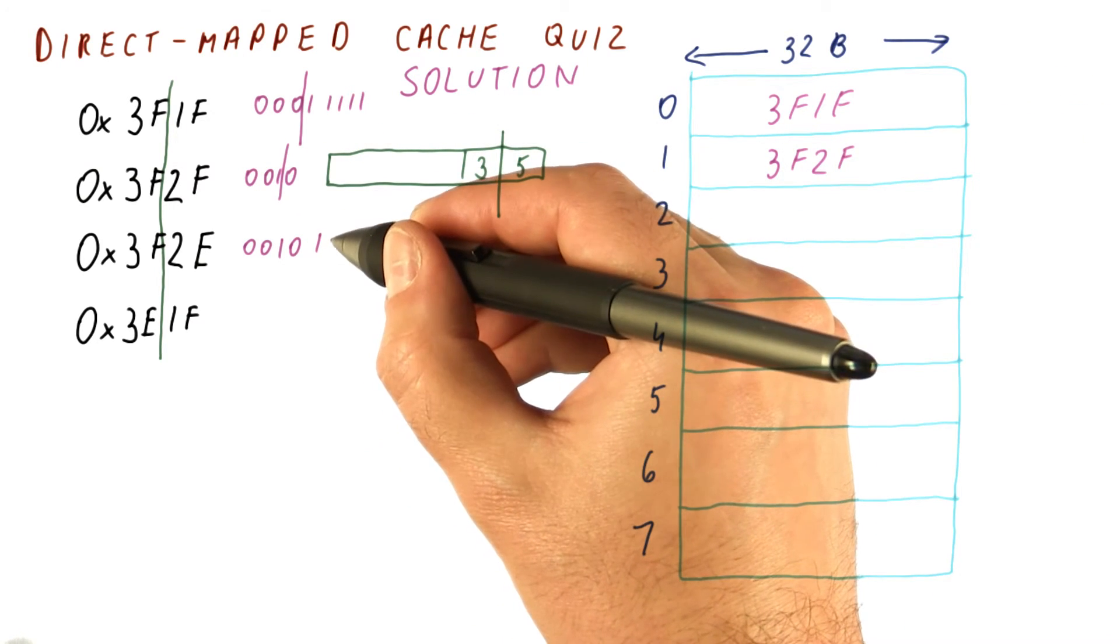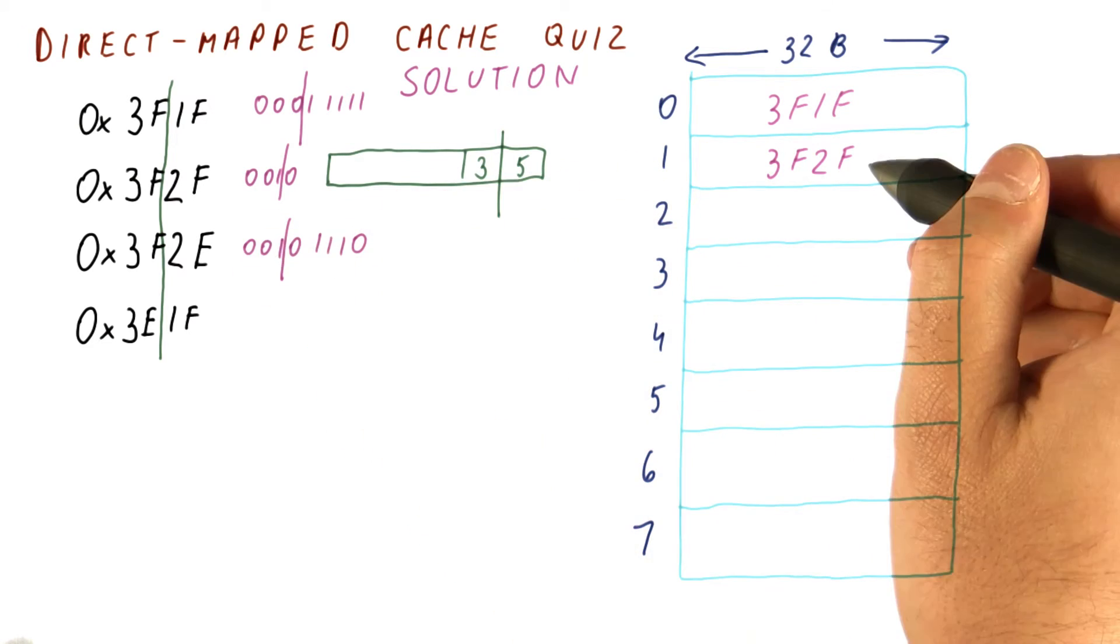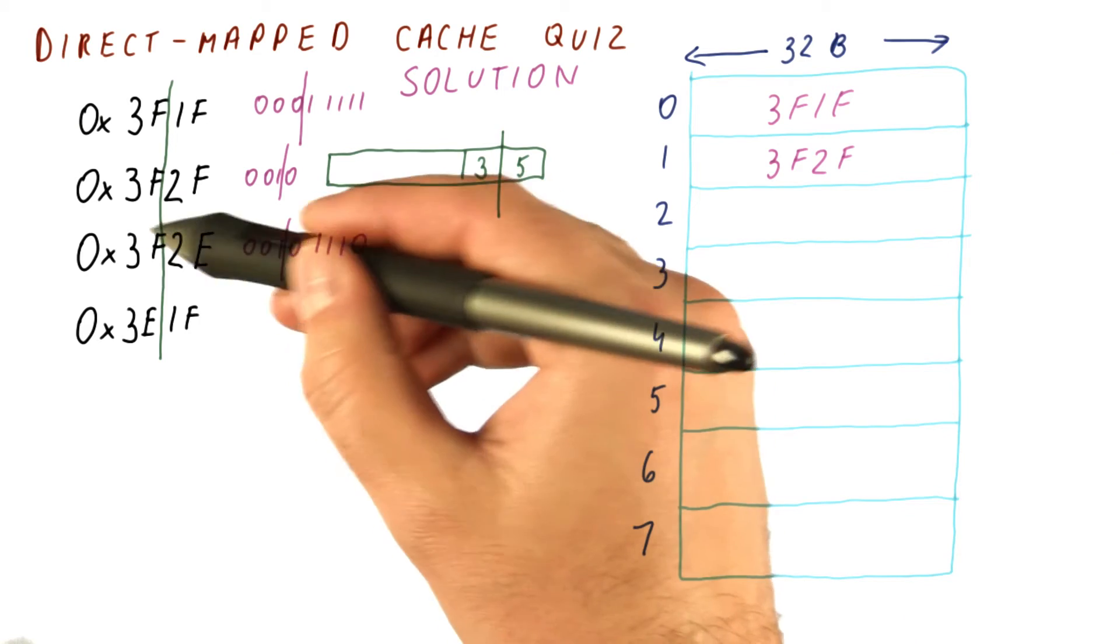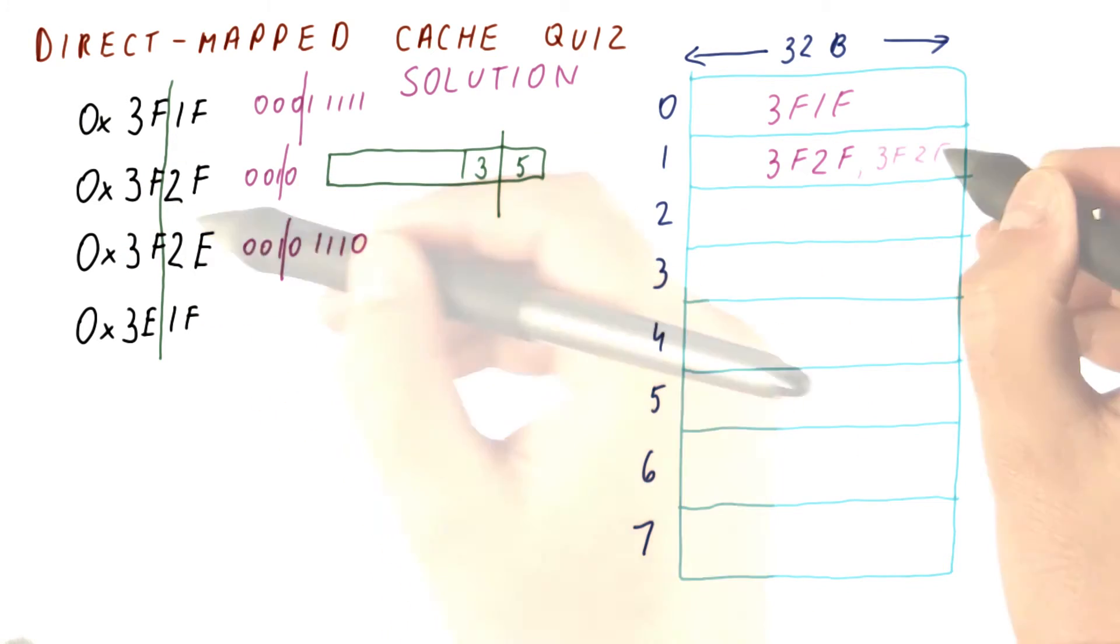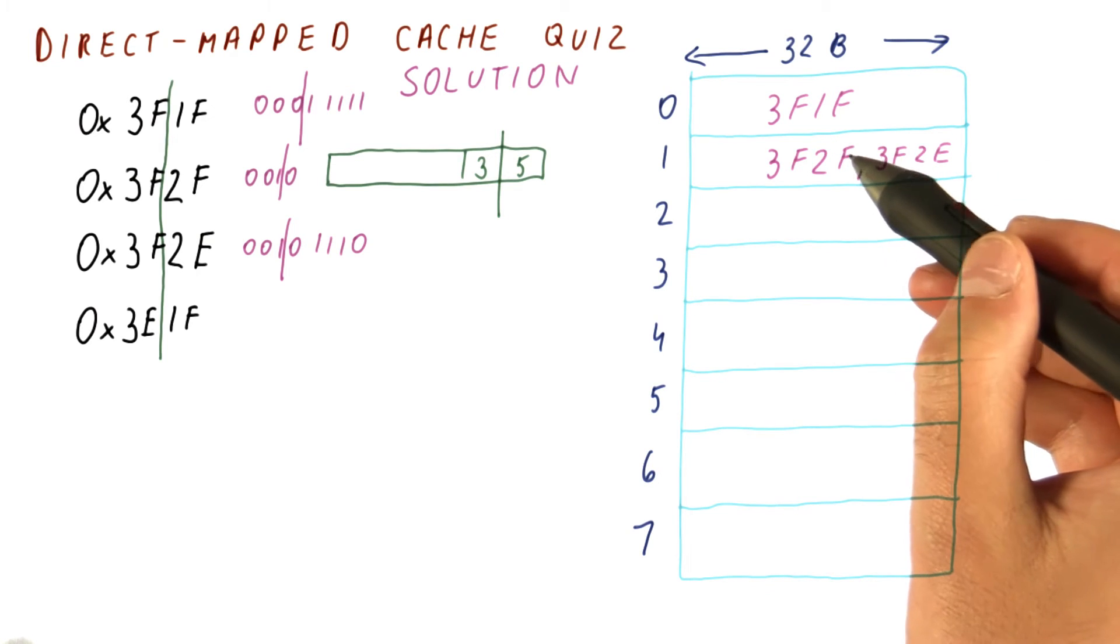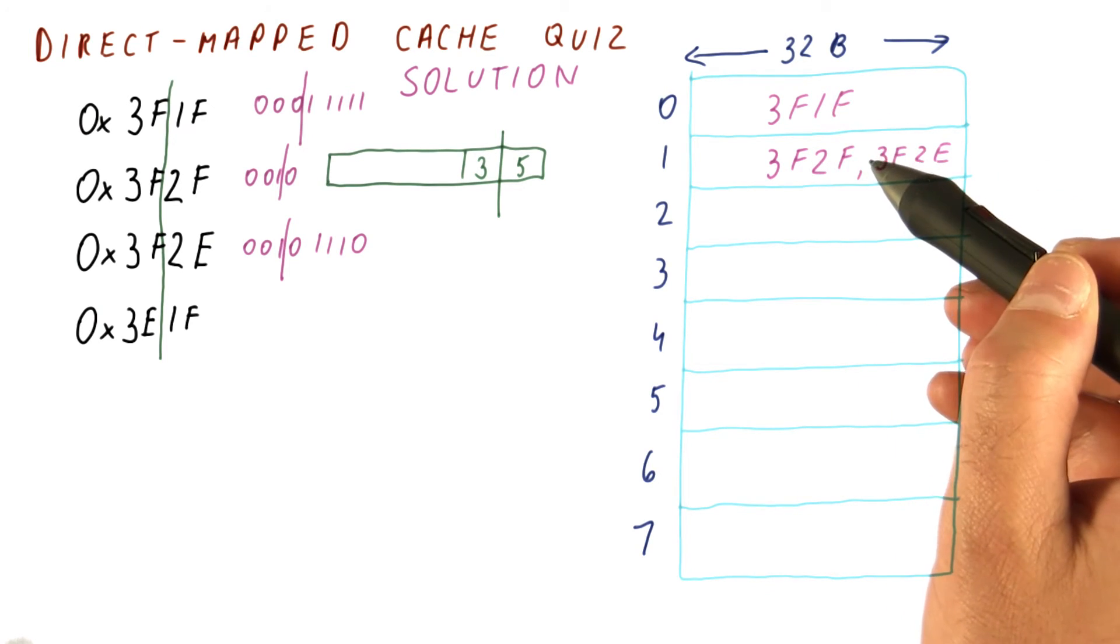3F2E has 2, and then E, it also maps here. Because it is actually the same block as this one. They will both be in this slot here. Because really the entire block 3F2 something is there.